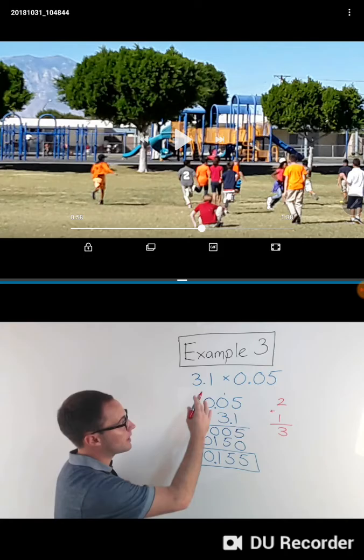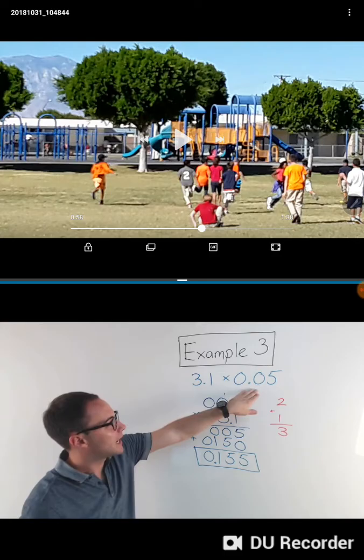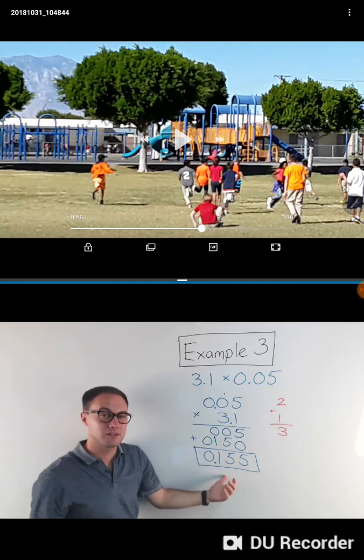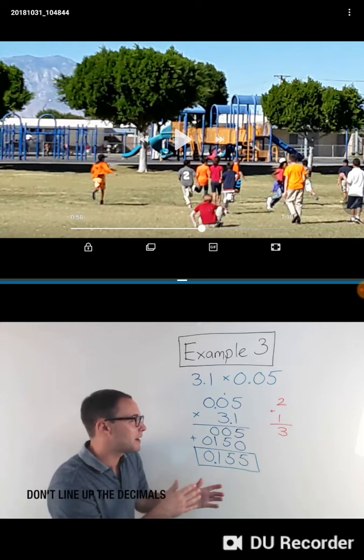And that is my answer. Now if I want to check, if I want to estimate, well if I'm going to estimate, that would round to 3 times, that's very close to 0. So 3 times 0 is 0. Is my answer pretty close to 0? Yeah, it is. So that's the last example.